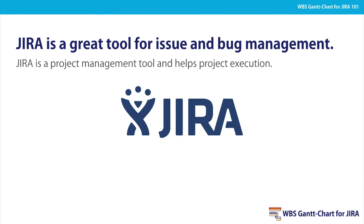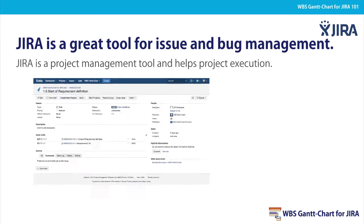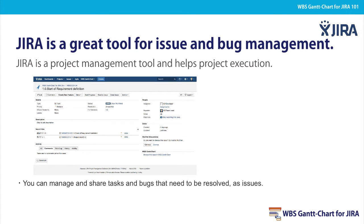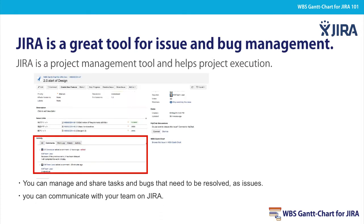Atlassian's JIRA is a great tool for issue and project management. Now let us first introduce JIRA. JIRA is a project management tool and helps with project execution. You can manage and share tasks and bugs that need to be resolved as issues. Also, you can communicate with your team on JIRA.